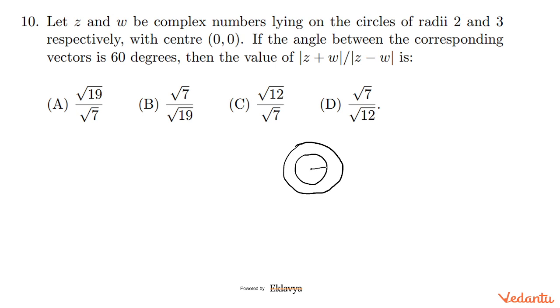60 degrees. So z is somewhere here at 60 degrees, which means this angle is π/3. Now w is lying on the circle somewhere. We have a rotation formula where this radius is 2 and this is 3. So (w-0)/(z-0)